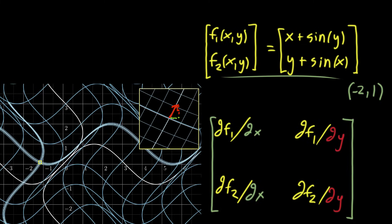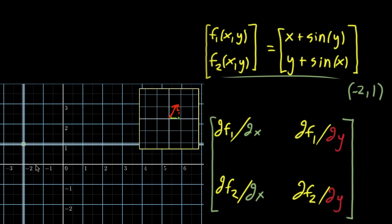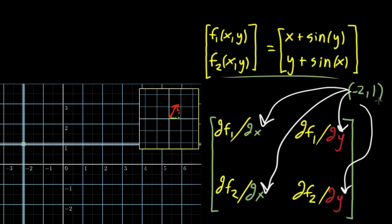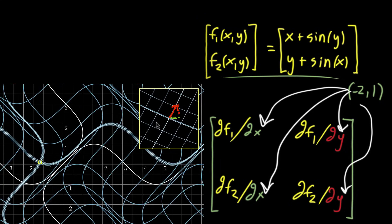And of course, all of this is very specific to the point that we started at. We started at the point negative 2, 1. So each of these partial derivatives is something that really we're saying, take the function, evaluate it at the point negative 2, 1. And when you evaluate each one of these at the point negative 2, 1, you'll get some number. And that will give you a very concrete 2 by 2 matrix that's going to represent the linear transformation that this guy looks like once you've zoomed in.